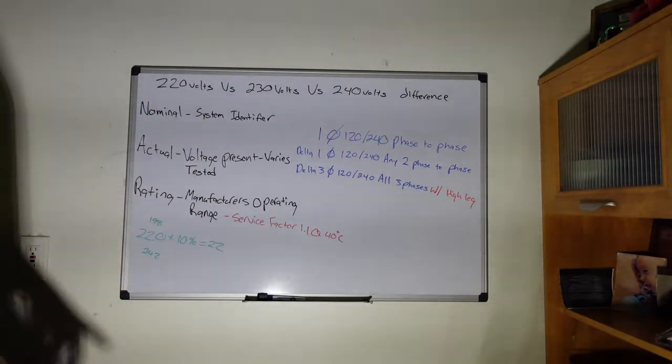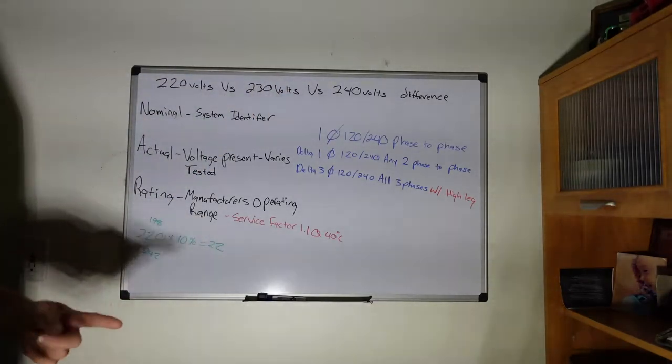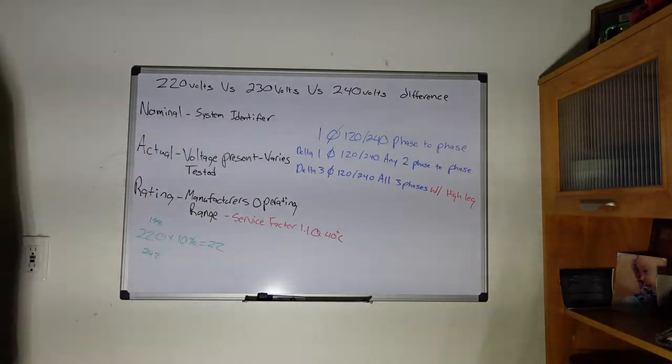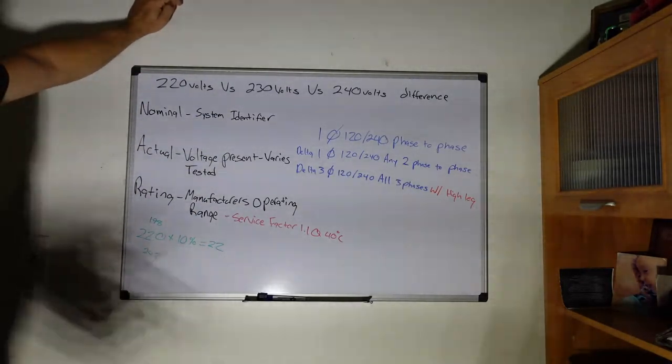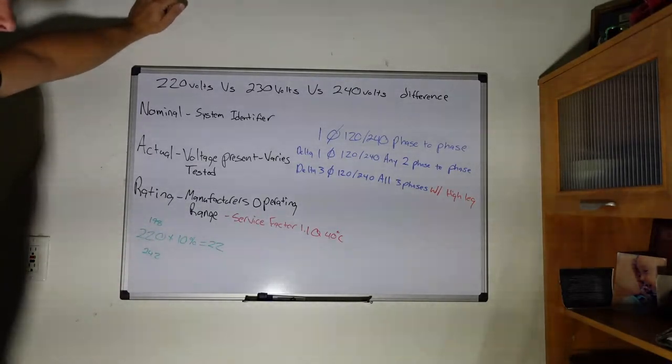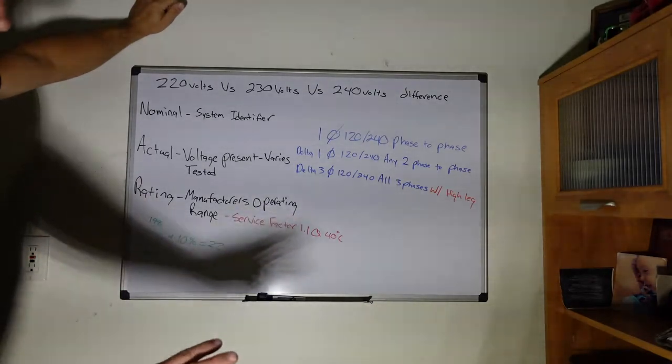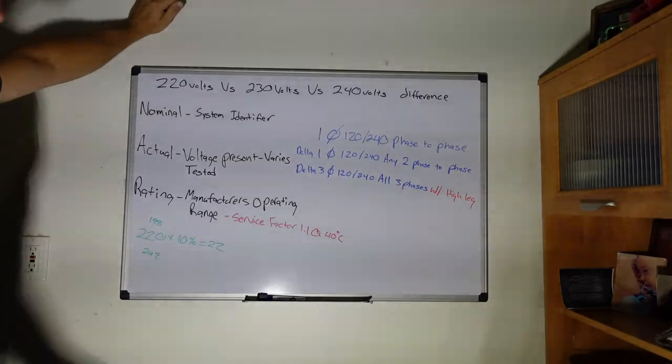For single phase 120/240, it's going to be phase to phase, single phase. You're only going to have two hot conductors and you use both of those to get 240, 220, 230, whatever you want to call it. If you also need single phase and you have a delta transformer, you'll have three legs, one of those is going to be the wild leg, but you would take any two of those and go phase to phase. It will get you 240.